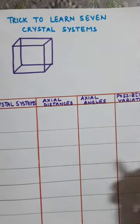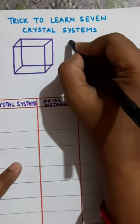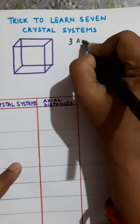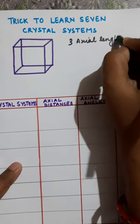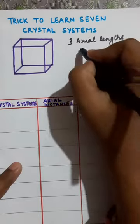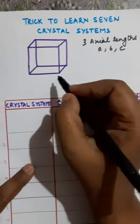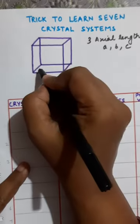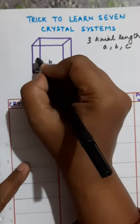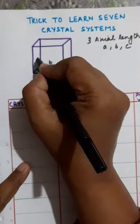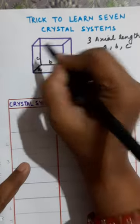Any unit cell is characterized by 6 parameters. There are 3 axial lengths, denoted by A, B and C. By convention, these lengths have been taken as A, B and C.